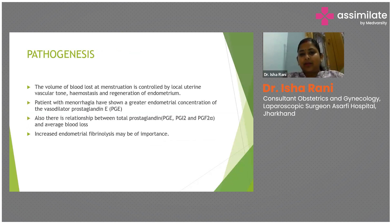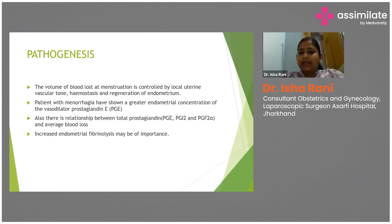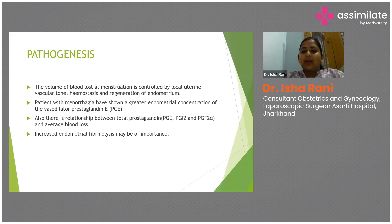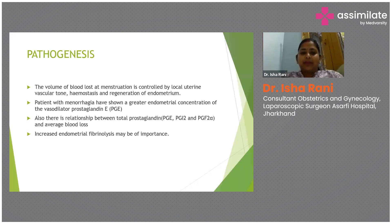The volume of blood loss at menstruation is controlled by local uterine vascular tone, hemostasis, and regeneration of the endometrium. There is often a disbalance in prostaglandin levels — the vasodilator prostaglandin E is seen at higher concentrations than other prostaglandins such as PGI2 and PGF2 alpha. There is also increased endometrial fibrinolysis, which may be of importance. These are all cellular processes occurring during menses.